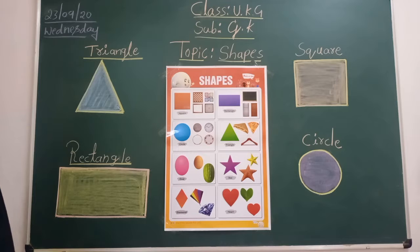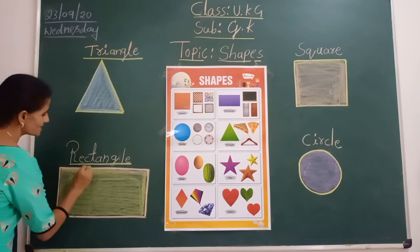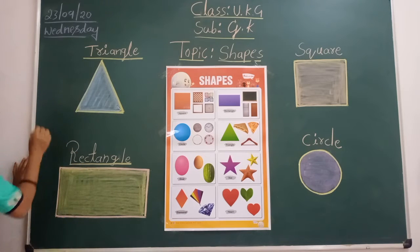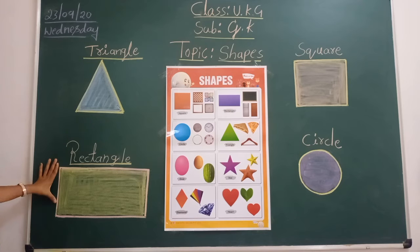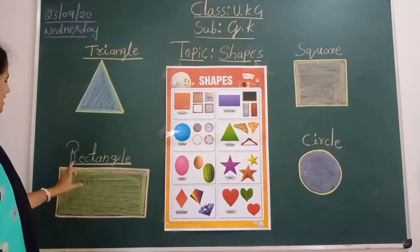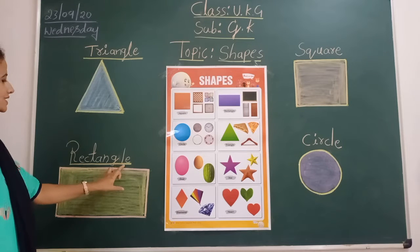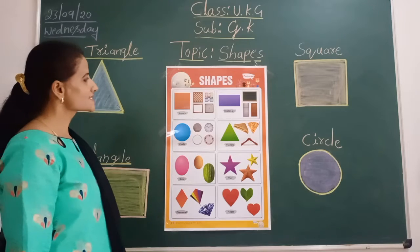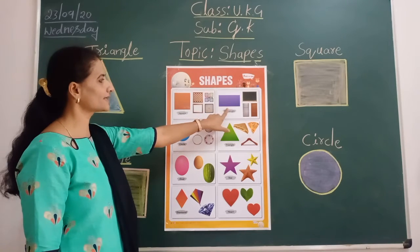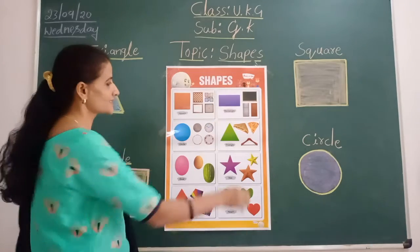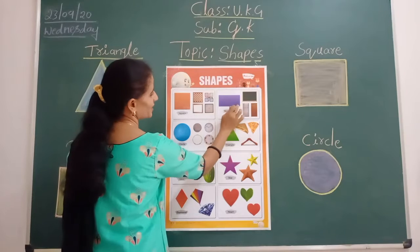Triangle. Next, we will go to rectangle. See here — how many sides? One, two, three, four. What is this shape? Rectangle. What is the spelling of rectangle? R-E-C-T-A-N-G-L-E. You will see in the chart where it was — here, rectangle. Which color? Purple color.